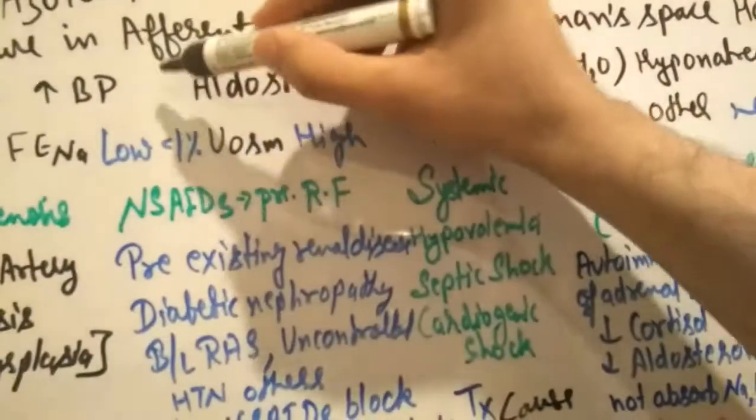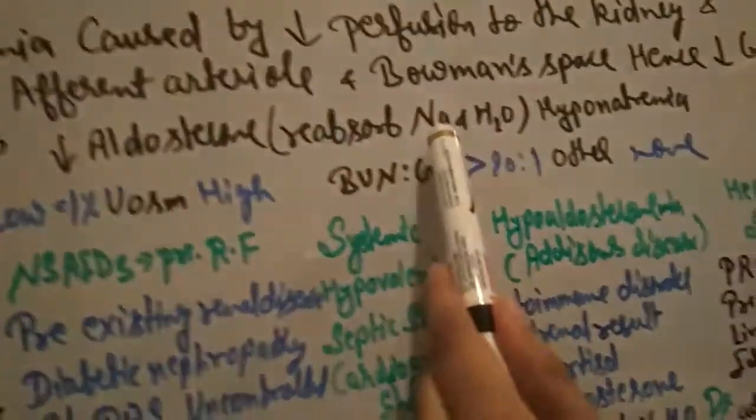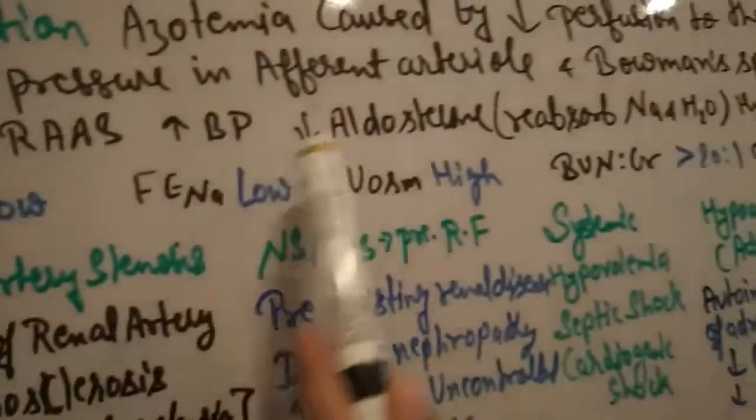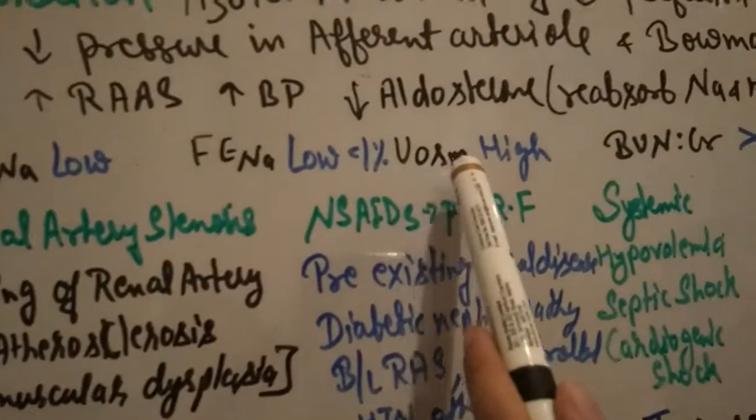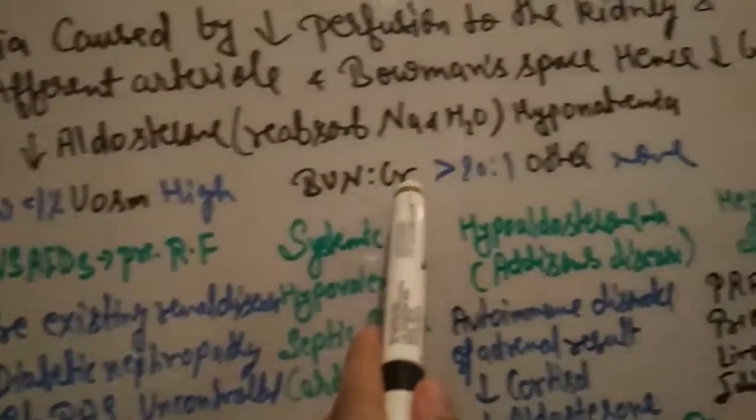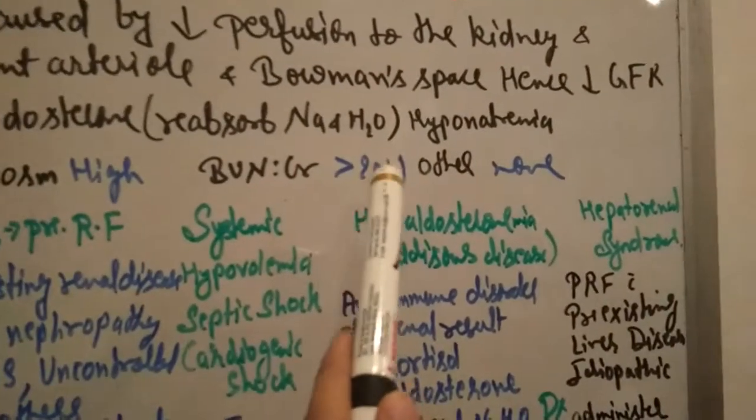Aldosterone decreases because there is low supply of blood and hyponatremia because it can't absorb sodium. So what happens: urine sodium low because aldosterone decreased, fractional excretion of sodium low, and BUN to creatinine ratio high because it's failure due to lack of blood supply.